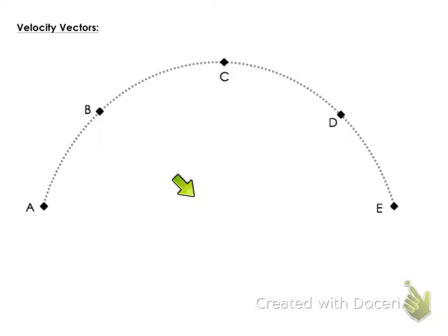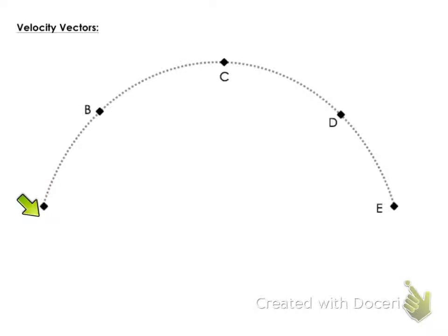Points A and E are on the ground. Point A is the initial point, right as it's punted and already moving. Point E is right before it strikes the ground — it's still moving, it hasn't yet hit the ground and come to a stop. It represents how fast it's going as it strikes the ground.